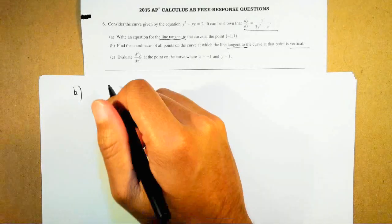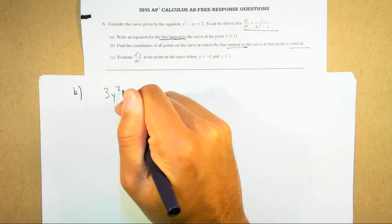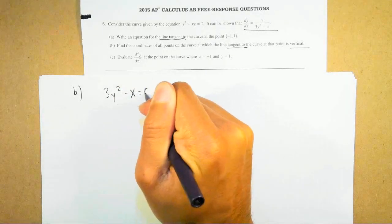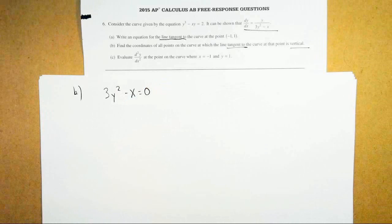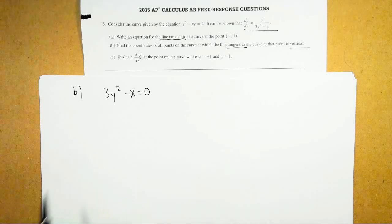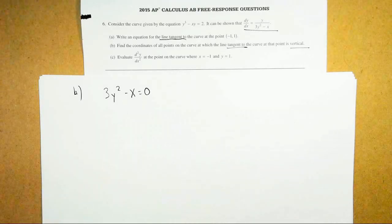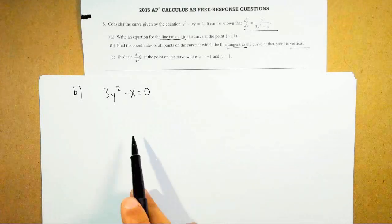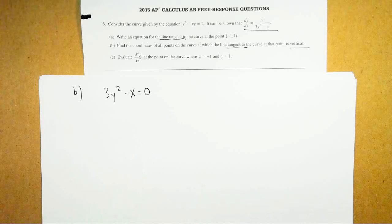What this means is: 3y squared minus x equals zero. This is one of those questions where if you didn't know that rule, there's no way you're going to get it right. But if you did, at least you'd be able to set that up — and knowing how to set up the denominator equal to zero earns you a point. In case they ask you for a horizontal tangent line, set the numerator of your derivative equal to zero.